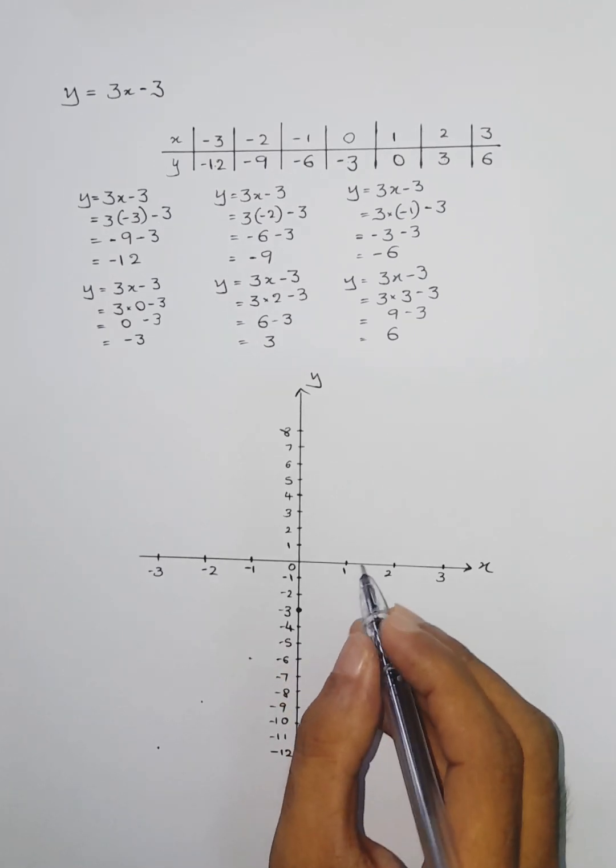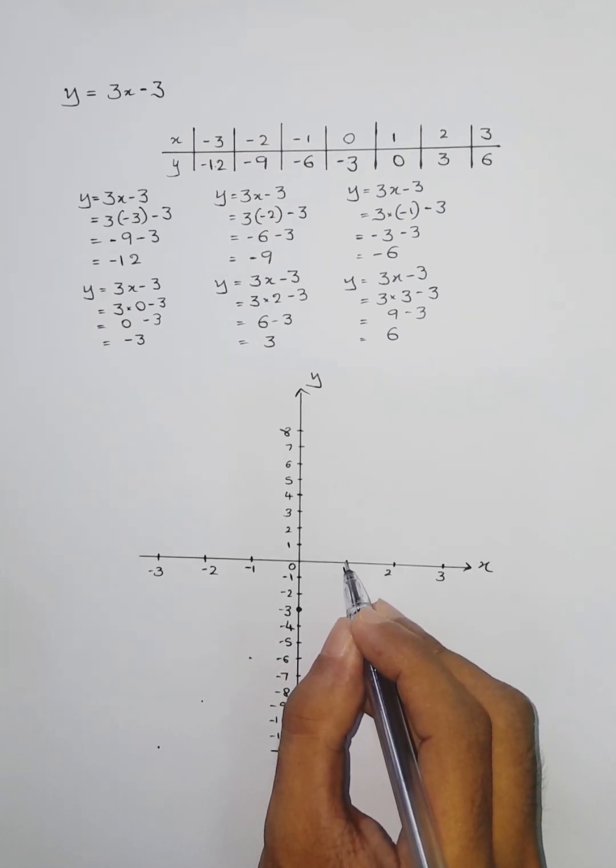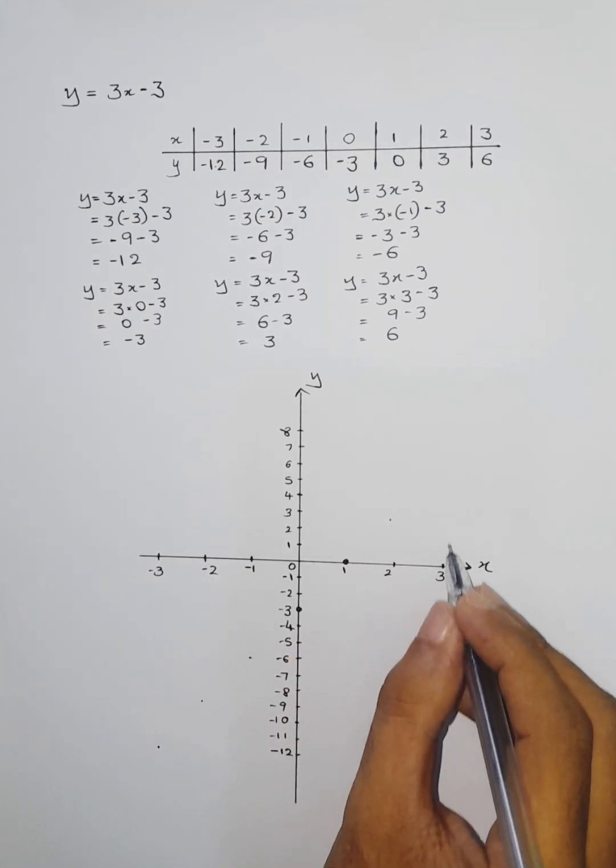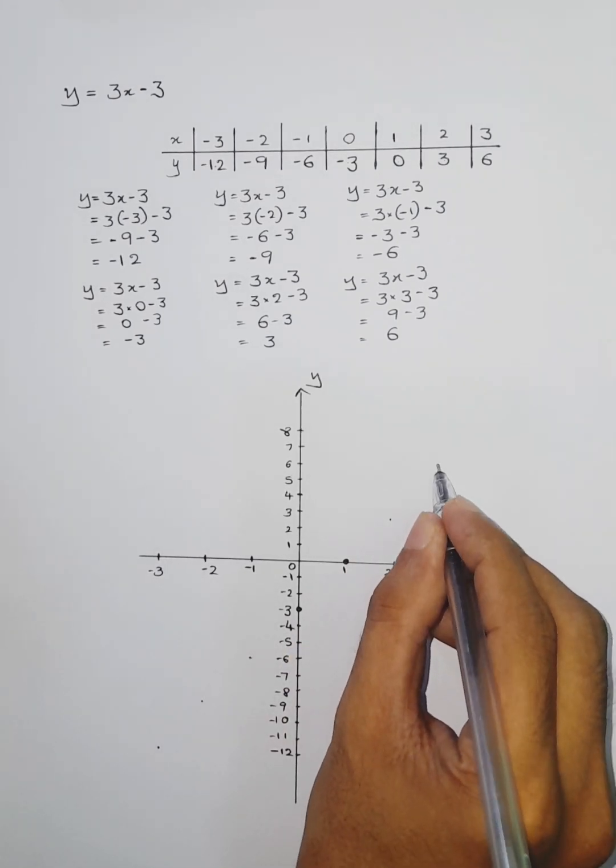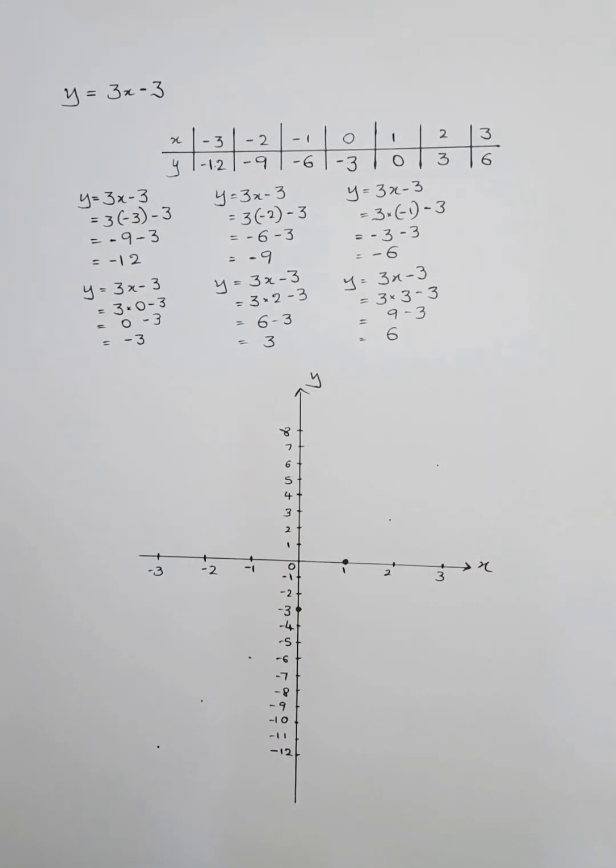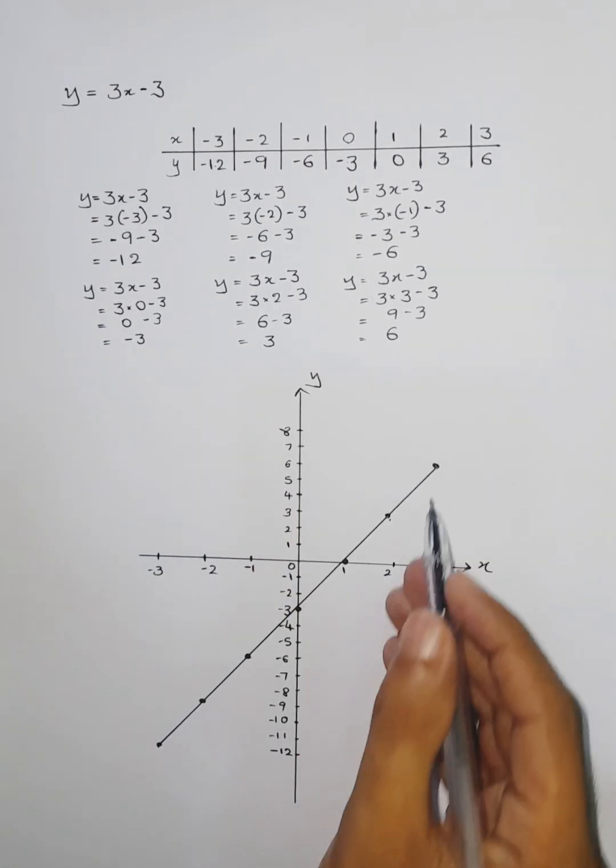0 to -3, and then 1 to 0, 1 to 0. And then 2 to 3, 2 to 3. And then 3 to 6, 3 to 6. That's it. Now you can join them all. That's fine.